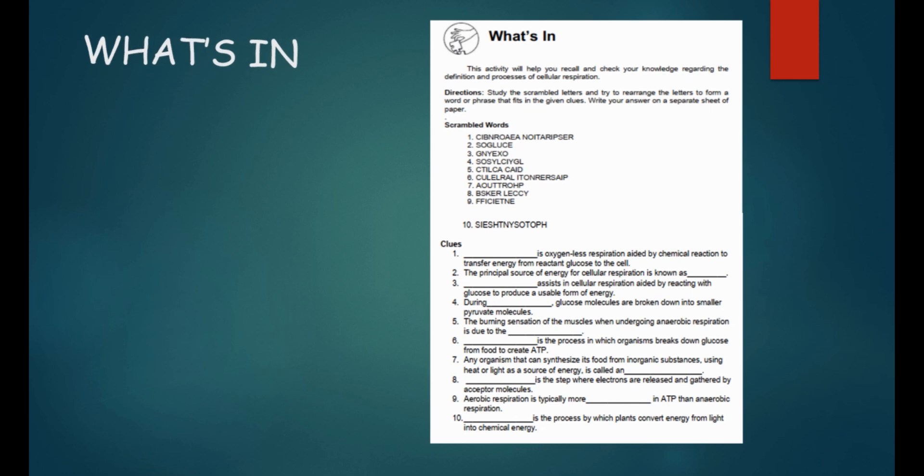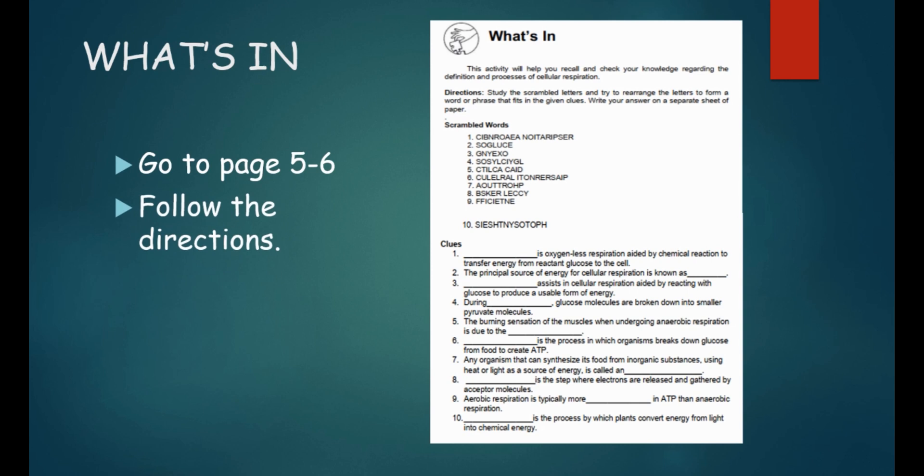Let's have more activities that have something to do with our lesson. Go to page 5 to 6 of your modules. This activity will help you recall and check your knowledge regarding the definition and processes of cellular respiration. Study the scrambled letters and try to rearrange letters to form a word or phrase that fits in the given clues. Write your answers in your activity notebook. Like in number 1, blank is an oxygen less respiration aided by chemical reaction to transfer energy from reactant glucose to the cell. The correct answer is anaerobic respiration. Are you ready to answer the rest? Let's go!